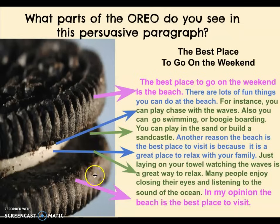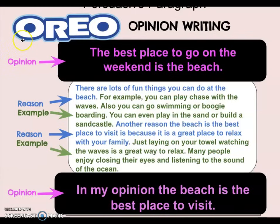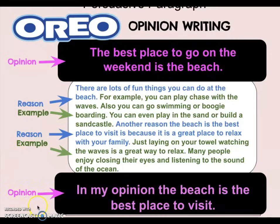The Oreo is helping to identify the different parts of this persuasive paragraph. We started with our opinion: 'The best place to go on the weekend is the beach.' Then we gave our first reason: 'There are lots of fun things you can do at the beach.' Then in green there are some examples — using 'for example,' which is a great way to remind yourself this is an example. Then another reason, letting your reader know it's great to relax there too, followed by more examples — you can watch the waves or close your eyes and enjoy the sound of the ocean. So we have two reasons each with examples, because this is a double stuffed Oreo. Then we close it all off with our opinion again: 'In my opinion, the beach is the best place to visit.'